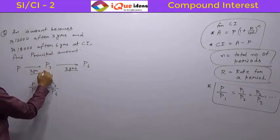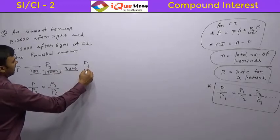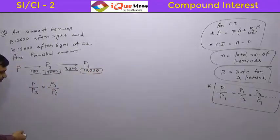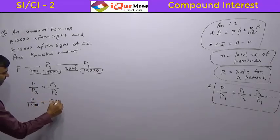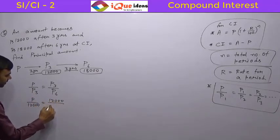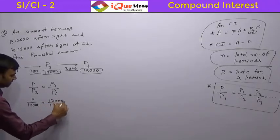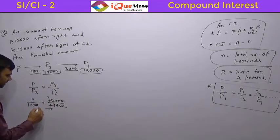P3 is already given as Rs. 12,000 and P6 is already given as Rs. 18,000. Just put them into the formula. So it is P divided by 12,000 equal to 12,000 divided by 18,000. Simplifying: 6 2's are 12, 6 3's are 18, giving us 2 cancels 12,000 to 4,000.